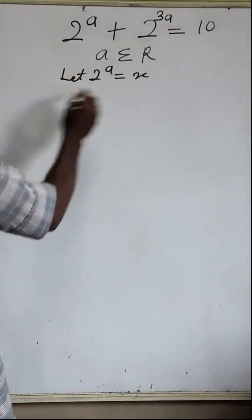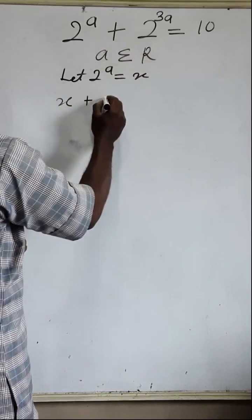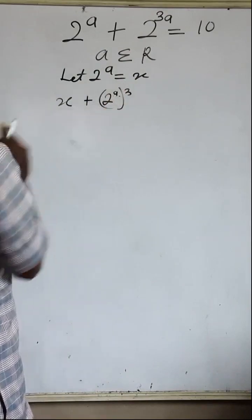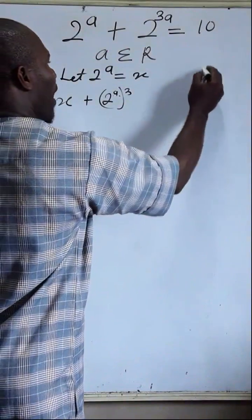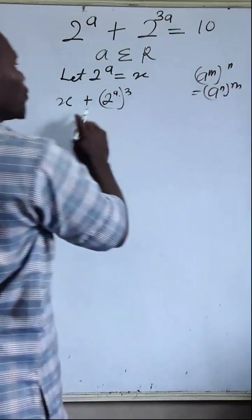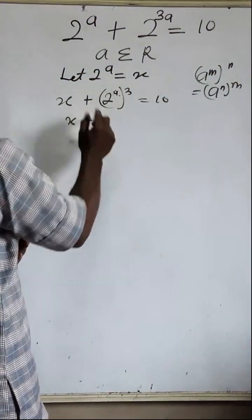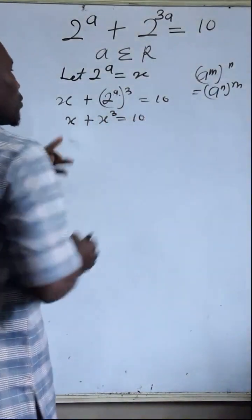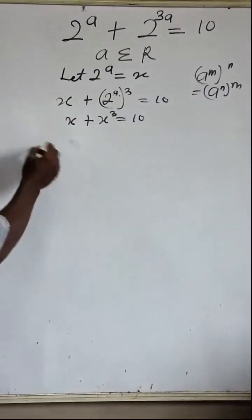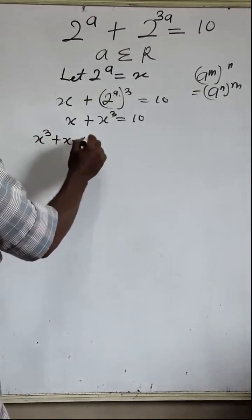By substitution, we have x plus — and recall the law that a raised to power n, then raised to power n again, can be written as a raised to power n times n — so 2 raised to power a, raised to power 3, gives us x raised to power 3. Therefore we get the equation x cubed + x = 10, which is a third-degree equation. Rearranging: x cubed + x minus 10 = 0.